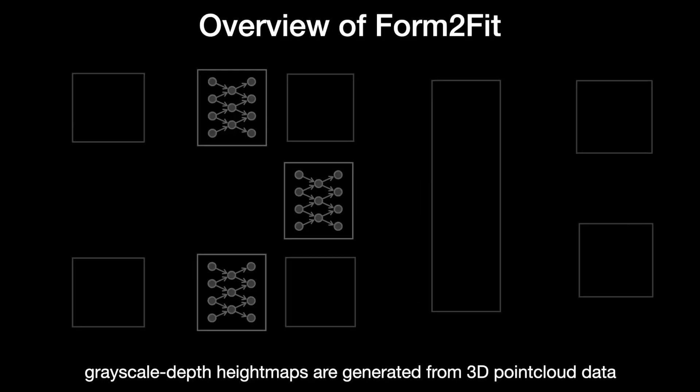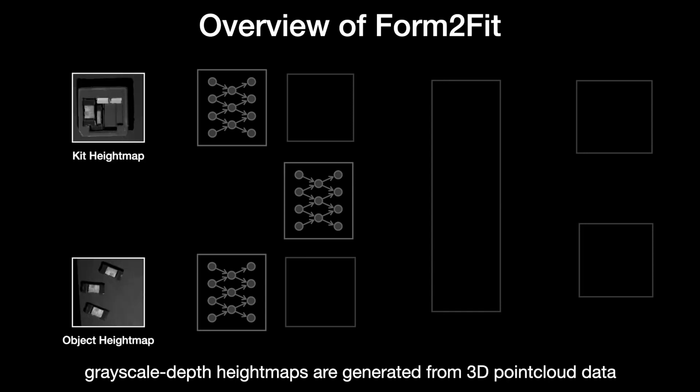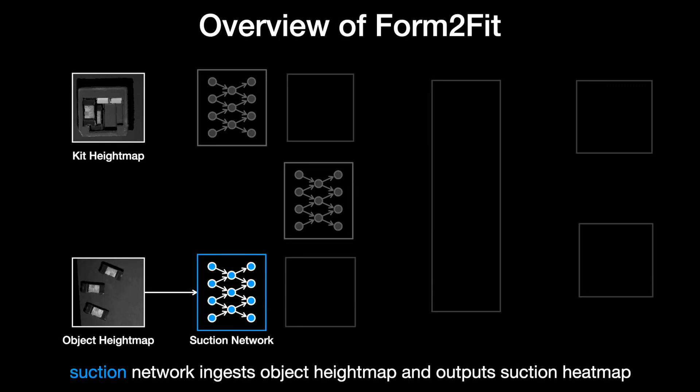Using a calibrated 3D camera, our system captures grayscale depth images of the robot workspace, and uses 3D point cloud information to produce two grayscale depth height maps, one for the kit and one for the objects. The object height map is fed to a suction module, which is a fully convolutional ResNet to generate pixel-wise predictions of suction success. Here, the suction probability map is visualized as a heat map, where hotter pixels indicate better 3D locations to execute the suction primitive.